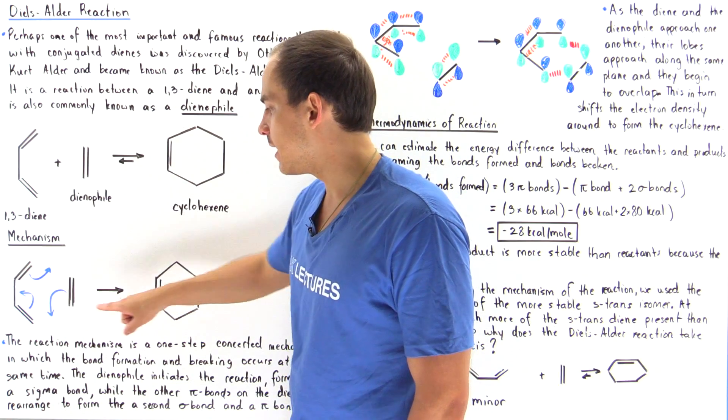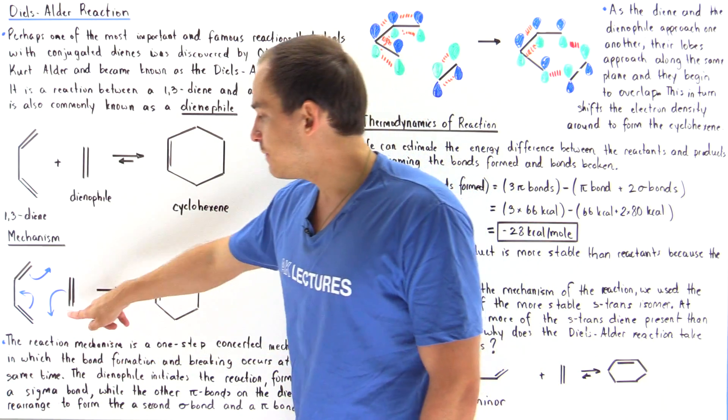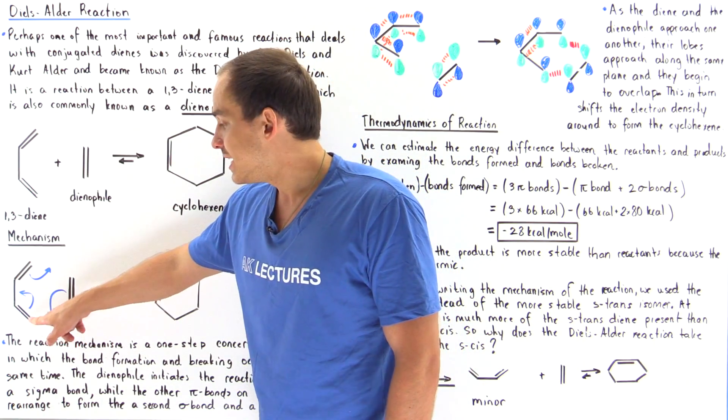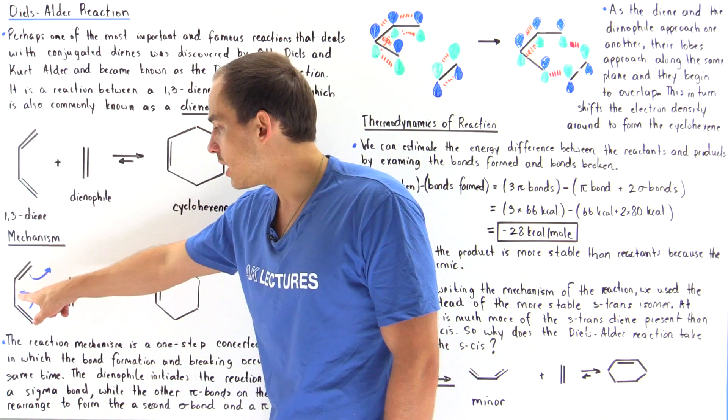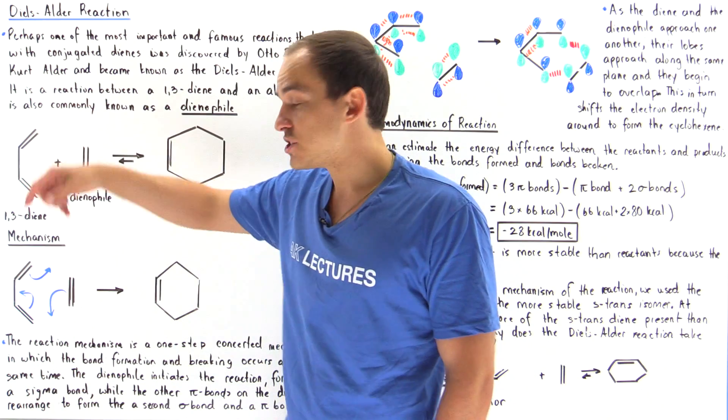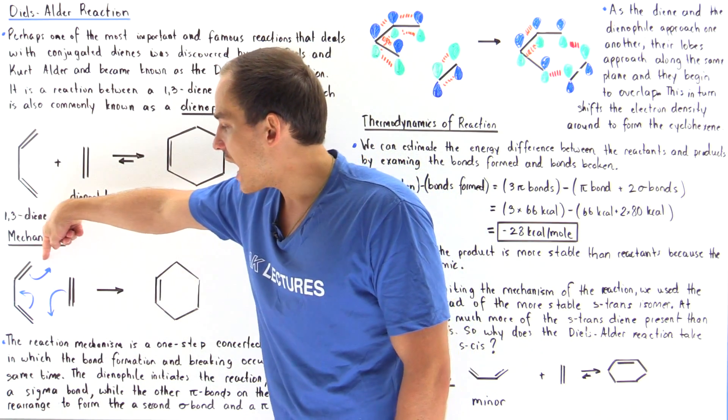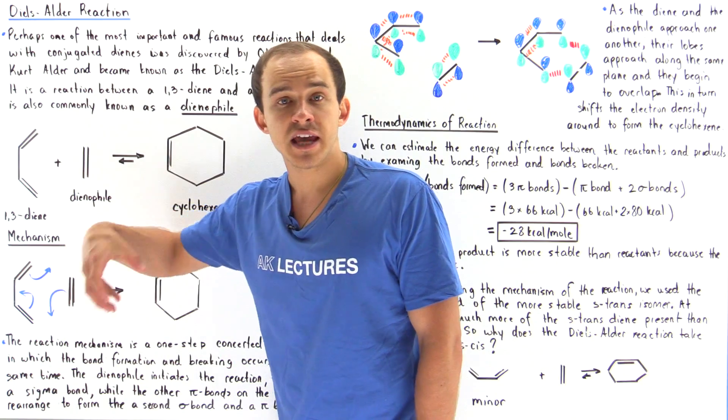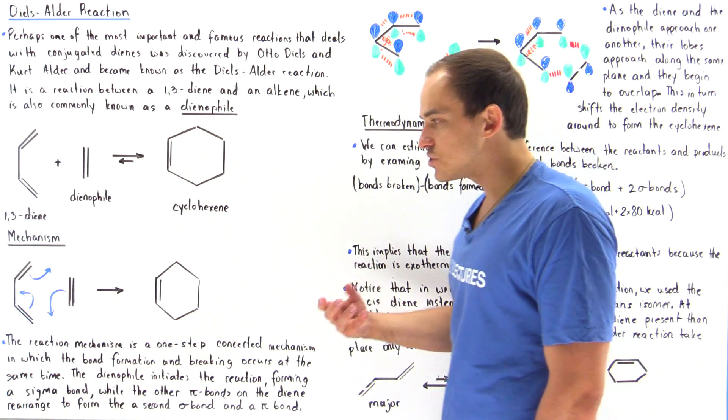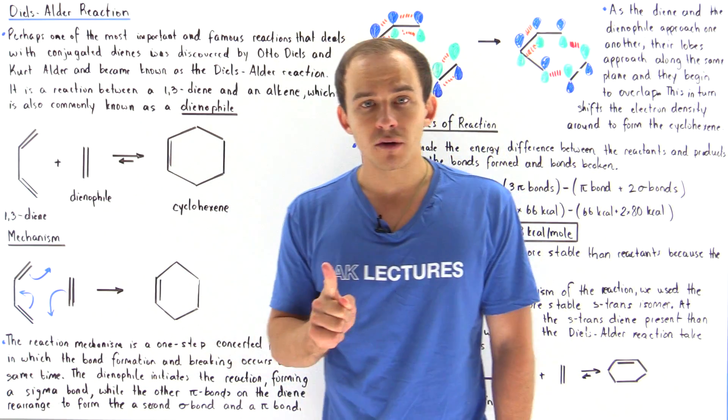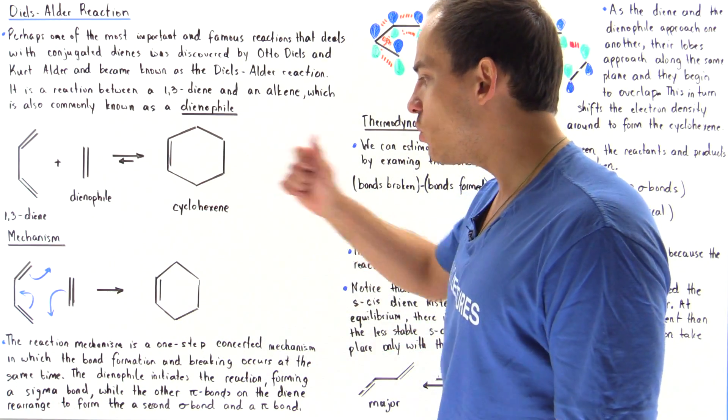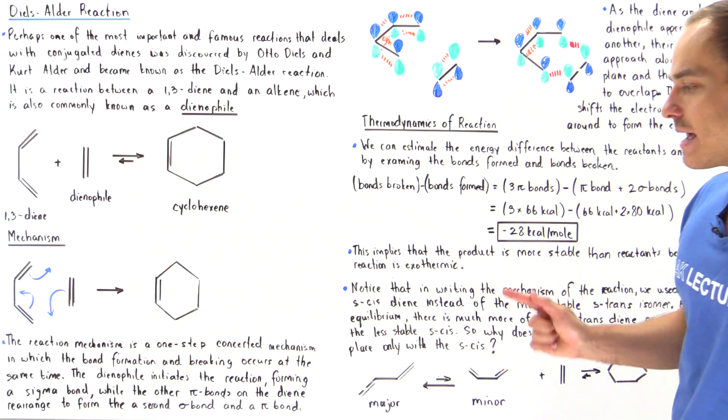The reaction takes place in the following format. We have our simple alkene, our dienophile, that takes its pi bond and forms a single sigma bond between this carbon and this carbon. That pushes these two electrons onto this bond forming a pi bond here, and then that displaces this pi bond which forms our single bond here. This takes place in a one-step concerted mechanism, meaning the bonds broken and the bonds formed all take place at the same exact moment in time.